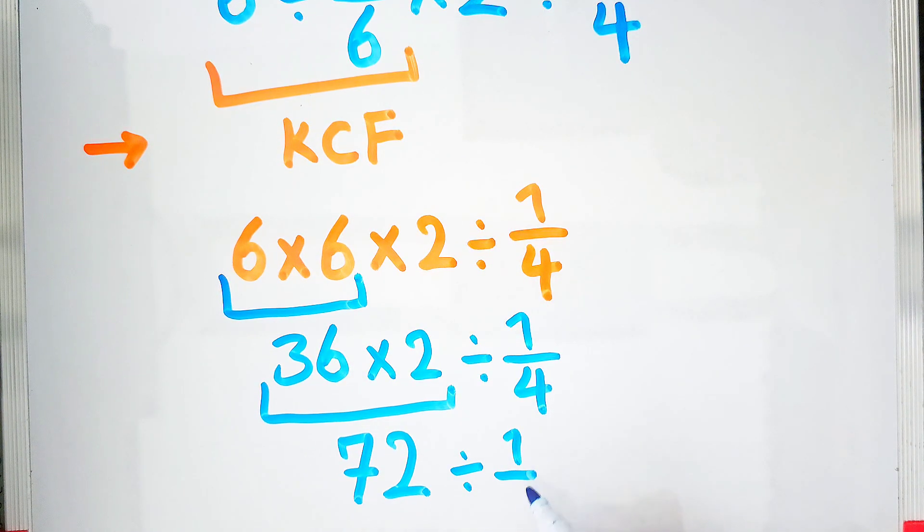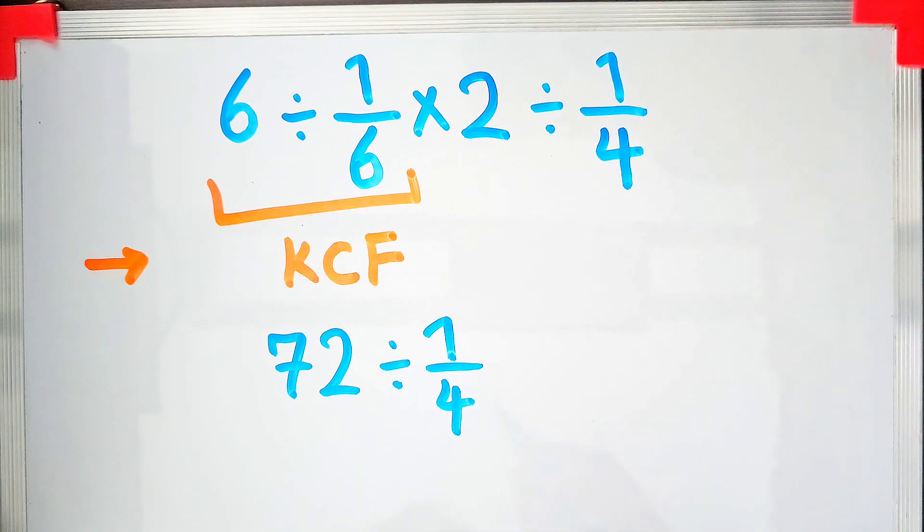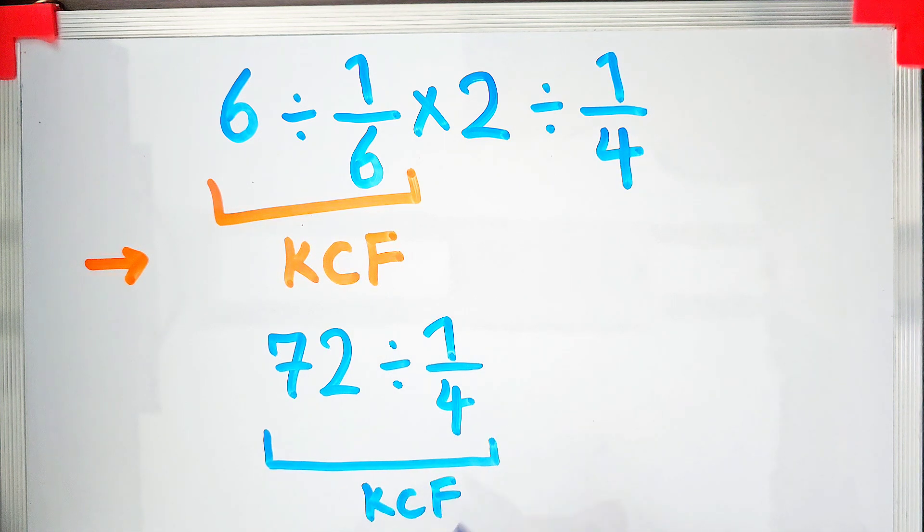As you can see in the image, we use the KCF rule and simplify the question. We keep the first number as it is: we have seventy-two. After that, we change the division sign to the multiplication sign.